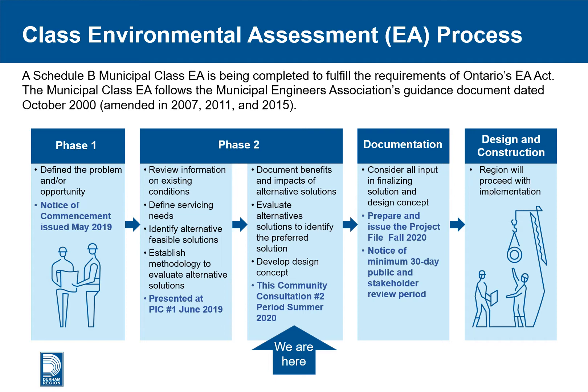The Class EA process is being completed in two phases. In phase one, the problem is defined, which is essentially the rationale for why a project is required. For this project, the Class EA was required because the existing wastewater pumping station that services most of Port Perry cannot provide capacity for the future. A notice of commencement of the EA process was sent out to inform the public of this project in May 2019.